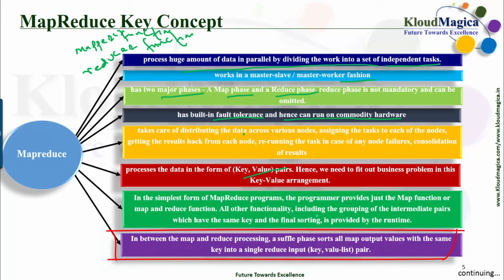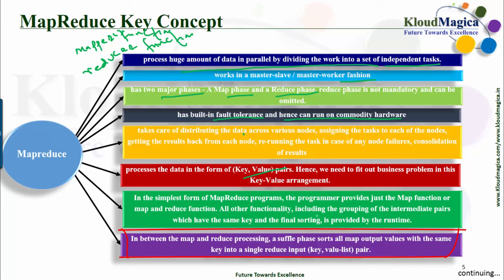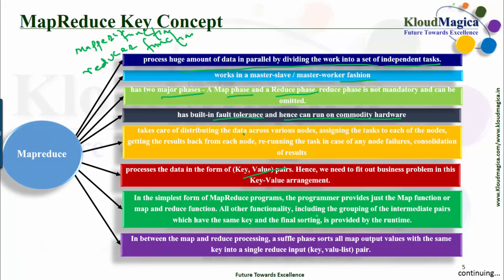In between the Map and Reduce processing, a shuffle phase sorts all the Map output values with the same key into a single Reduce input key and value-list pairs, where the value list is a list of all values sharing the same key. Thus, the input to a Reduce task is actually a set of key/value-list pairs.